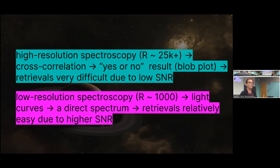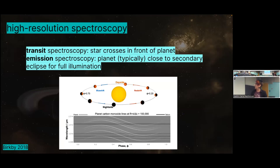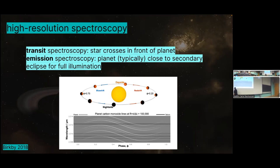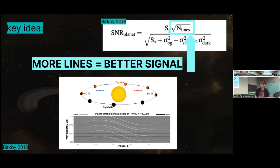Low resolution is a little bit easier to do retrievals with once you have an actual spectrum with higher signal-to-noise. With high res, you have so many data points that you're really spreading your light out far, so you're not getting as much light per bin. Transit spectroscopy is when the planet crosses in front of the star. Emission spectroscopy usually takes place around secondary eclipse when the dayside of the planet is fully illuminated. The key idea — from a paper by Burke et al. — is that the more lines you have in your exoplanet spectrum, the higher your signal-to-noise for your planet is going to be.